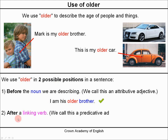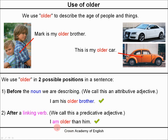The second possible position is after a linking verb — linking verbs are verbs like to be, feel, or seems — and we call this the predicative adjective. For example: I am older than him. Here the linking verb is to be, and after it is older, our comparative adjective. Both positions are possible with the word older.